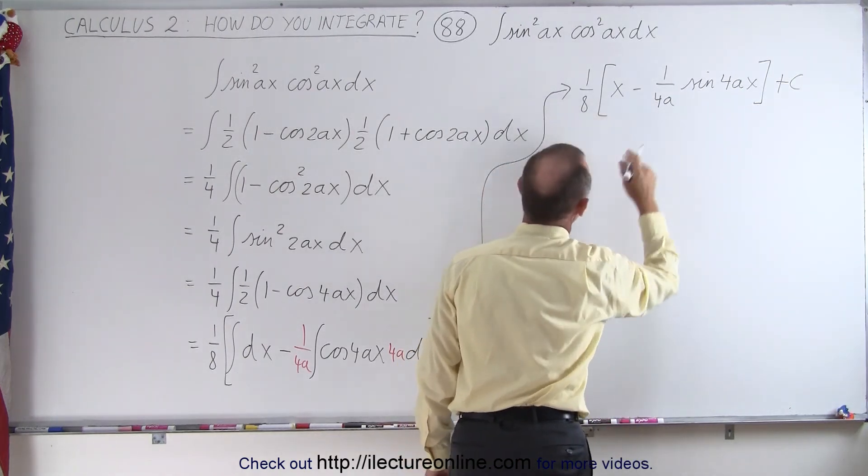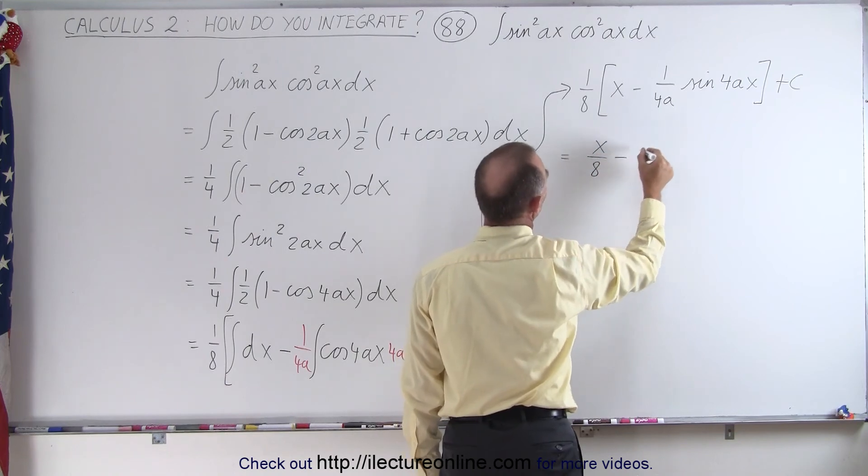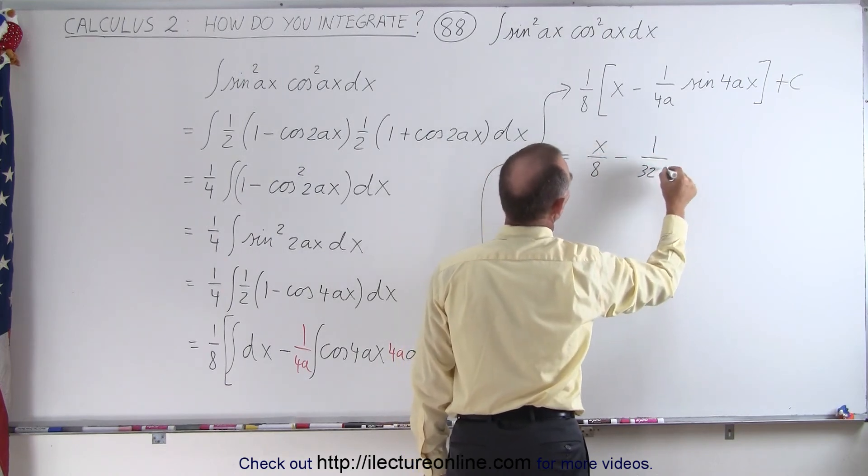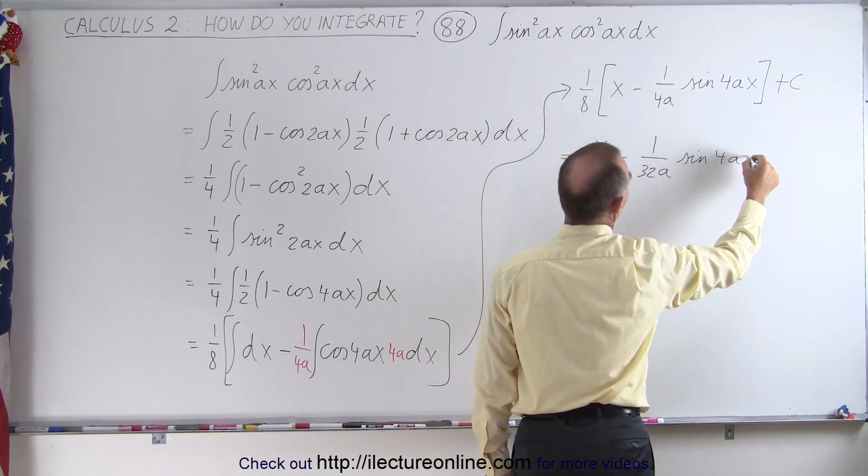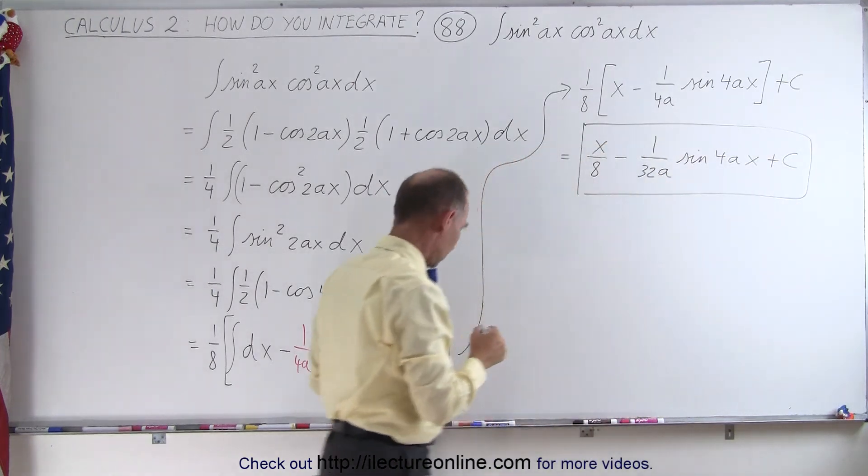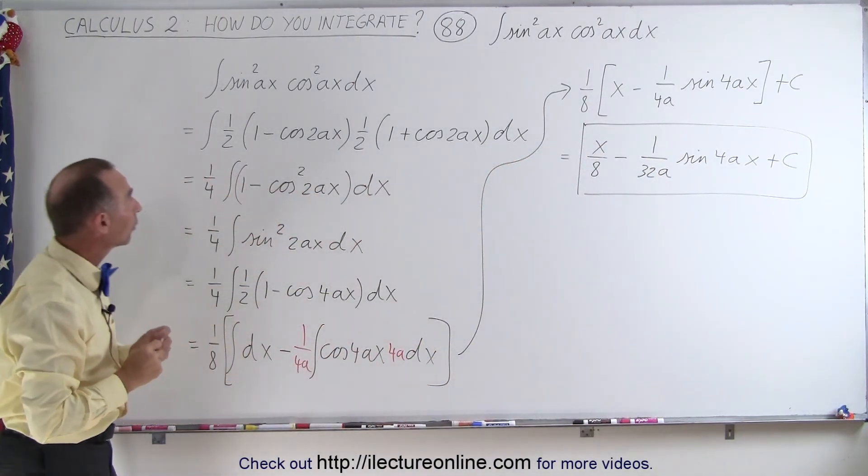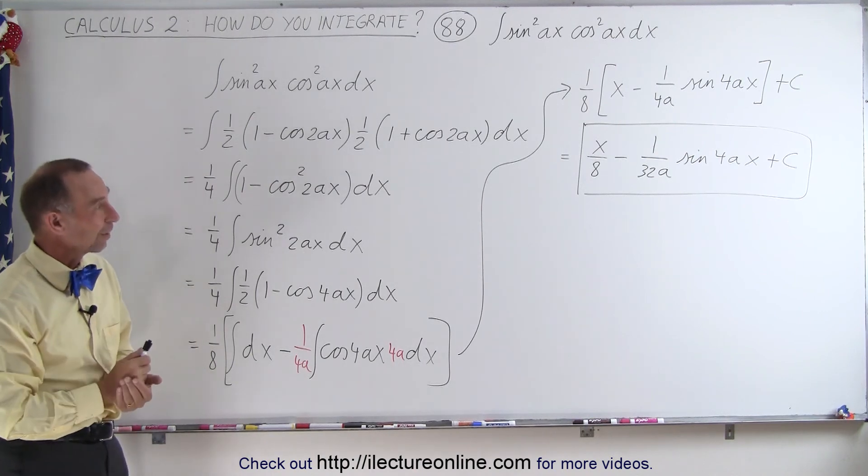Then if we multiply this out, this will be equal to x over 8 minus 1 over 32A times the sine of 4Ax plus a constant of integration, and then this will be the result of the integral when both the sine and the cosine are squared. And that's how it's done.